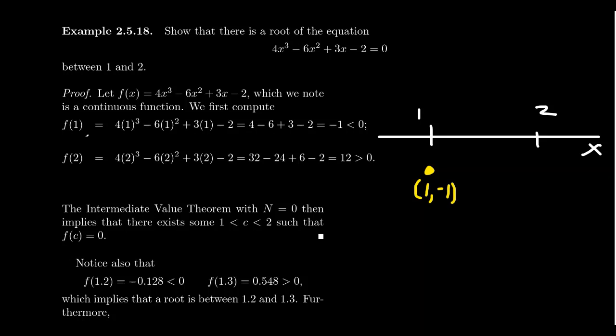What about at f(2)? If we were to do f(2), again, just evaluate the function. You're going to get 4 times 2³ - 6 times 2² + 3 times 2 - 2. 2³ is equal to 8 times 4 is 32. 2² is 4 times 6 is 24. 3 times 2 is 6 and -2. And so when you combine those together, 32 - 24 + 6 - 2, that adds up to be 12, which is positive.